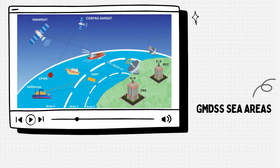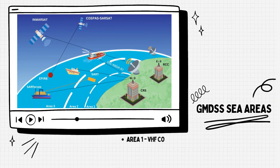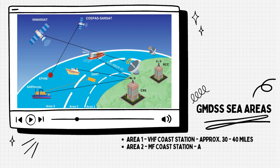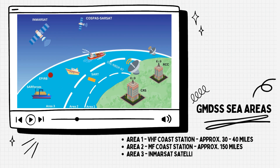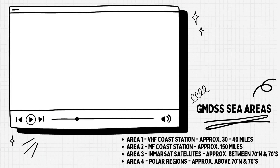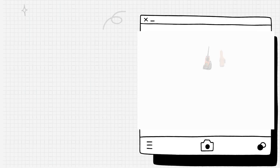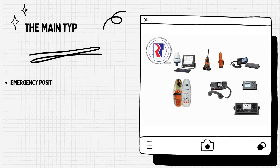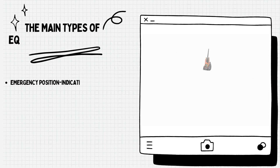GMDSS areas are classified in the following four areas: Area 1, VHF Coast Station; Area 2, MF Coast Station; Area 3, Inmarsat Satellites; Area 4, Polar Regions.